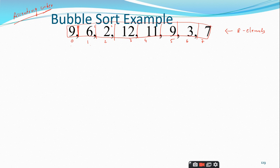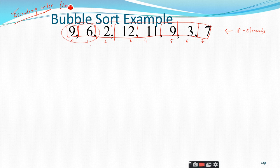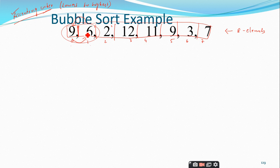Since we are using ascending order, 9 and 6 are out of order — the lower element should be on the left-hand side and 9 should be on the right-hand side. So these two elements are out of order; they are violating the ascending order. Therefore you just swap these two elements.